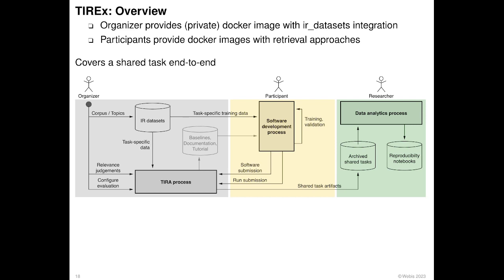The basic idea of TREX is that organizers provide a potentially private Docker image with an IR datasets integration, and participants provide Docker images with their retrieval approaches. The participant Docker images are executed on the potentially private data in a sandbox so that data can never be leaked. TREX thus covers shared tasks end to end: the corpus and topics go into IR datasets, participants develop their approach and make software submissions, and if organizers allow it, participants can also make run submissions. Everything is gathered in TIRA, which ensures reproducibility and replicability. After a shared task is finished, the shared task artifacts are publicly released so that other researchers can reuse the approaches and the produced data.